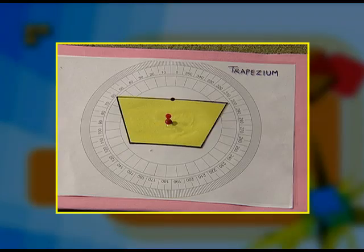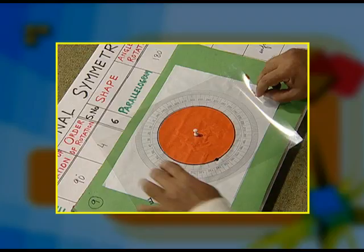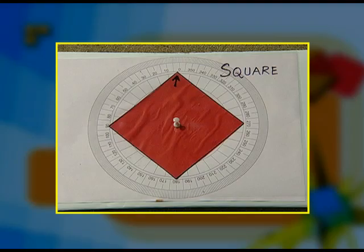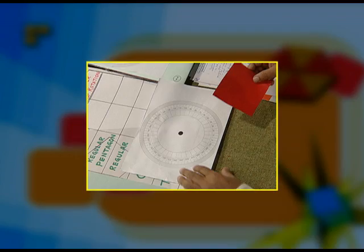Material required: cut out of various geometrical figures, glazed paper, chart paper, cardboard, thumb pins, and print out of a circular protractor.